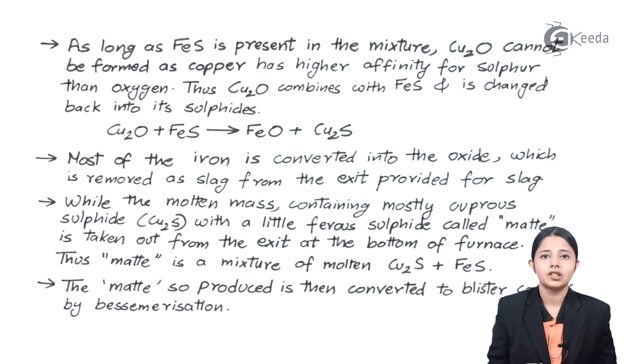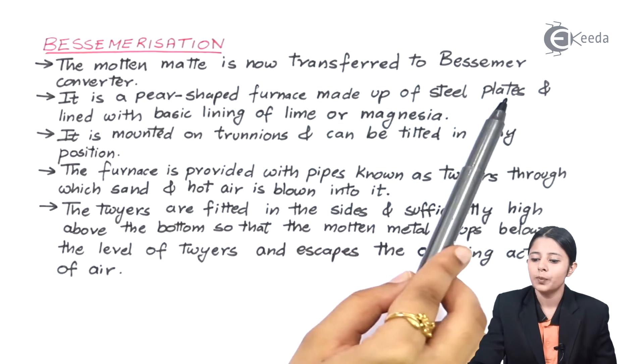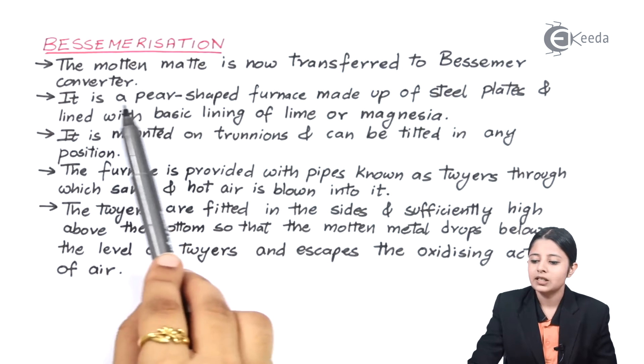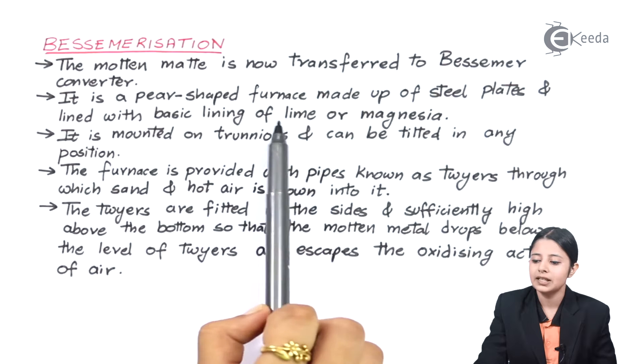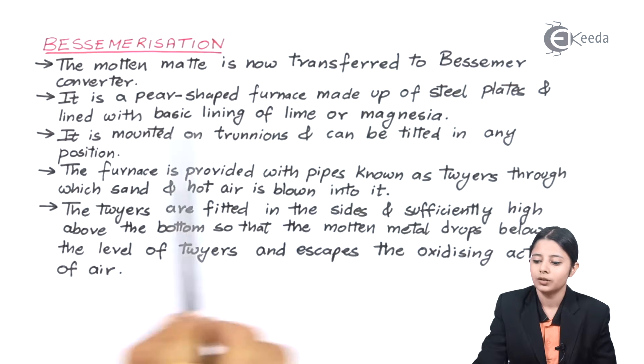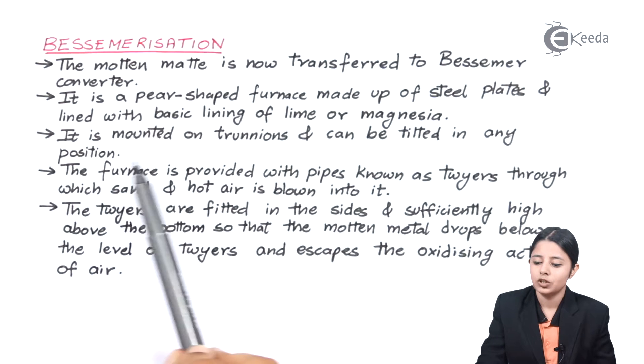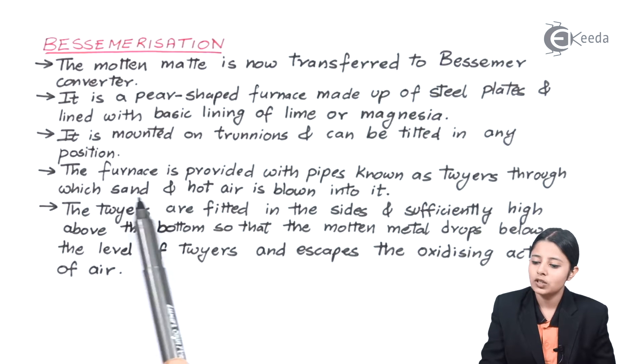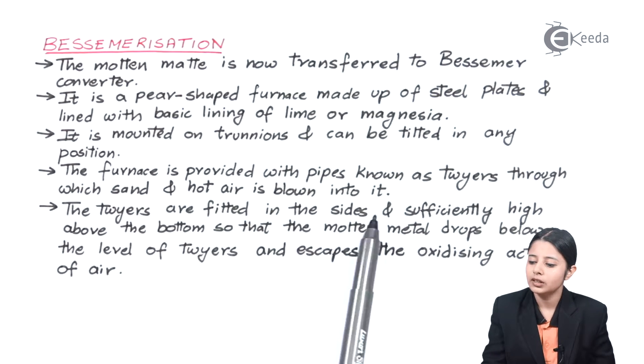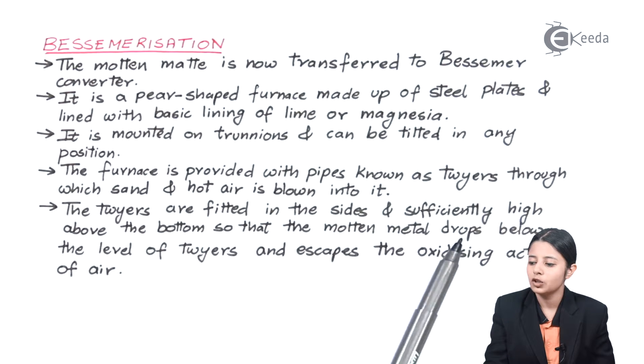The matte so produced is then converted to blister copper with the help of Bessemerization. Now we will study the process of Bessemerization. The molten matte is now transferred to Bessemer converter. It is a pear shaped furnace made up of steel plates and lined with basic lining of lime and magnesia. It is mounted on trunnions and can be tilted in any position. The furnace is provided with pipes known as tuyeres through which sand and hot air are blown into it.